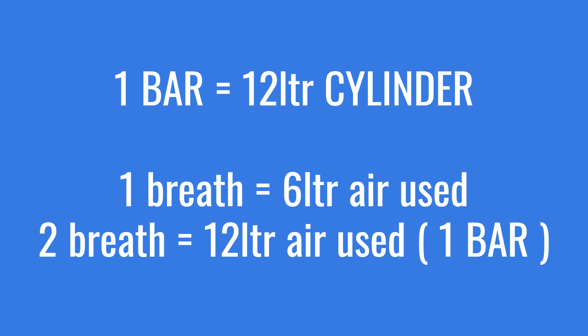If you are at 30 meters, you're breathing six liters of air per breath. That basically means with every two breaths you take, you are using one bar of air. Whereas if you are diving at 10 meters, you're only using three liters of air per breath, which means you'll take four breaths to use that same one bar of air.